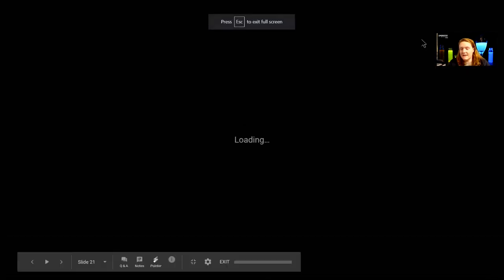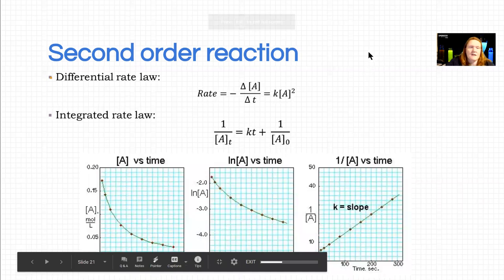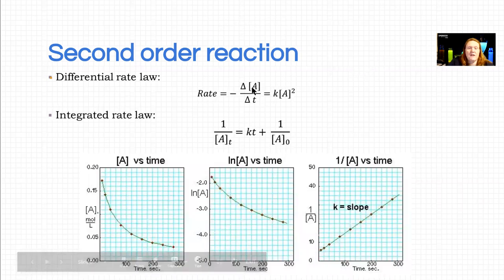This is our last video about kinetics. Second order reactions mean that when you double the concentration of A, the rate quadruples, because two squared is four times faster.